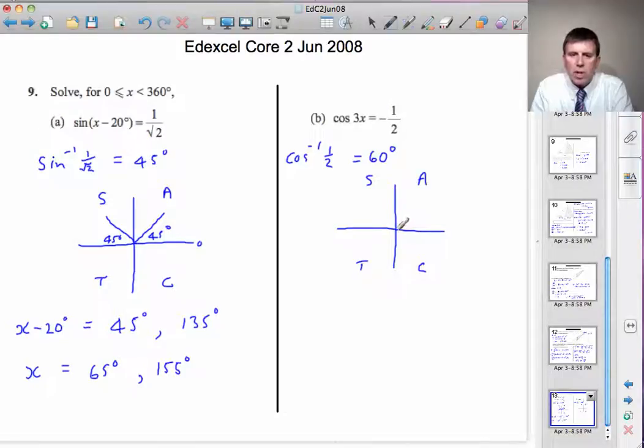And the two quadrants where cos is negative are that one and that one. So, I make these 60 degree angles with the horizontal in the quadrants where cos is negative.